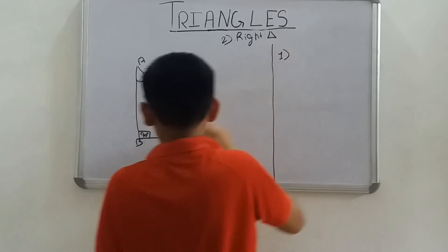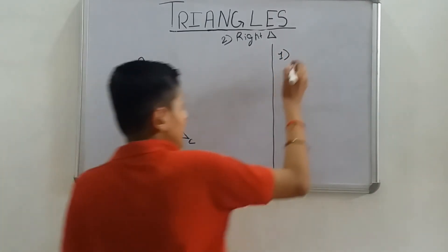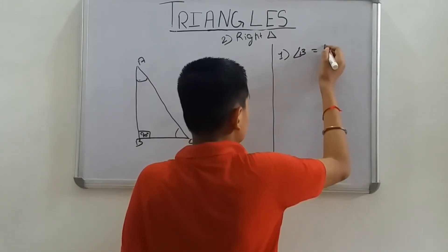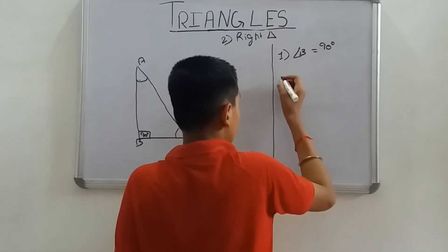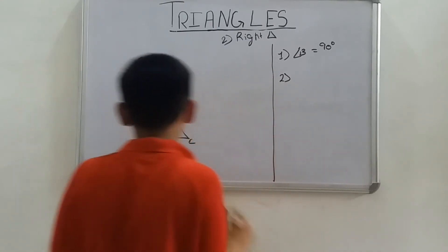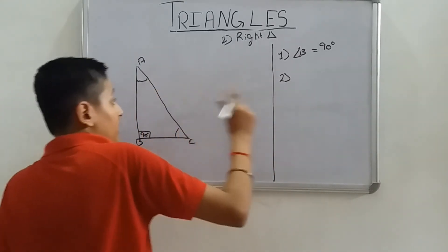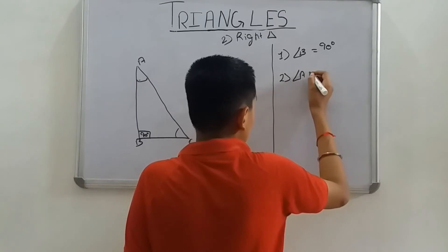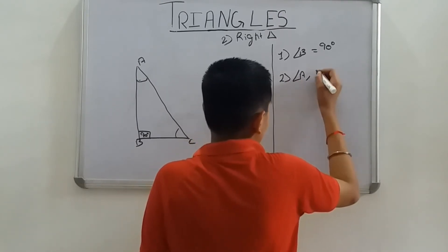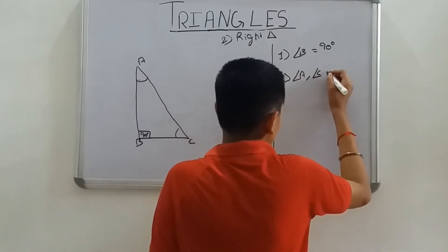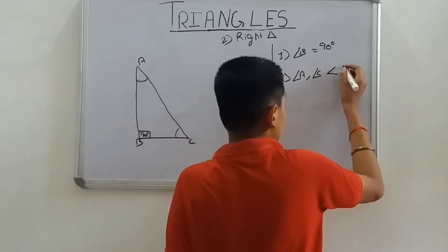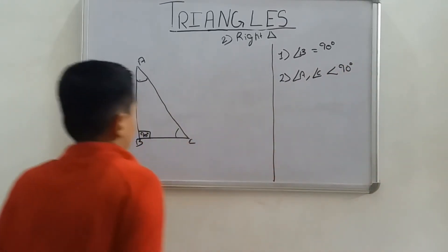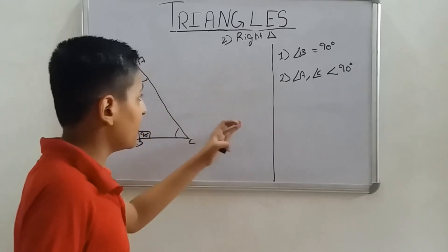First property: angle B is equal to 90 degrees. Second property: the other two angles — angle A and angle C — are less than 90 degrees. This is the right angle triangle.